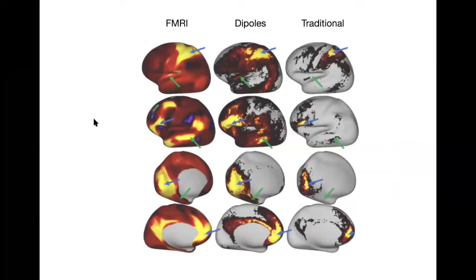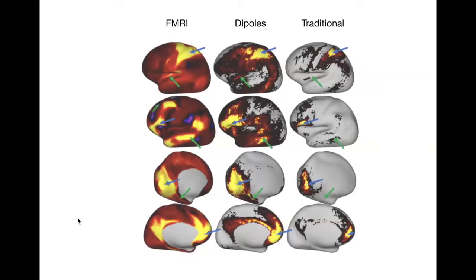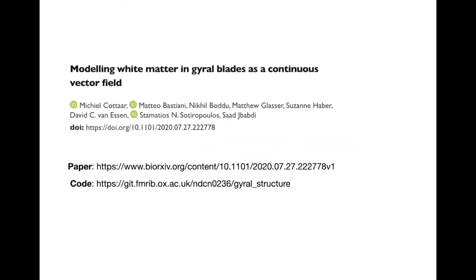Another way to look at gyral bias is to look for borders between areas with different connections. This map shows similarities between adjacent vertices in terms of connectivity profile to the rest of the brain. The red lines are transitions between one profile and another, and they tend to align with gyrification and sulcal patterns — caused by this gyral bias. When you use this field model, you don't get so many of these sharp borders at the gyral crowns. Finally, we compared this to resting-state fMRI connectivity, looking at four examples. Deliberately seeding from gyral wall or sulcal side points, which give sparse connectivity profiles with the traditional model, we get nice correspondence with resting-state fMRI when using the dipole model. The paper is on bioRxiv, and hopefully soon in an image journal; the code is available.